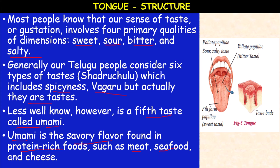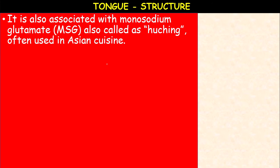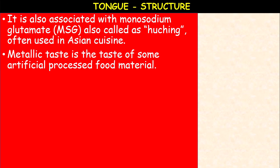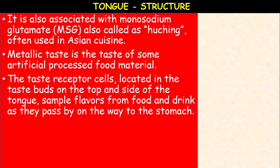Basically the four main tastes are: sweet at the tip of the tongue, then sour and salty at the sides of the tongue, and bitter at the back of the tongue. The tongue is also associated with monosodium glutamate — MSG — also called ajinomoto, often used in Asian cuisine. The metallic taste is the taste of some artificial processed food material. For example, in Chinese noodles they add chemicals like ajinomoto, which are metallic taste flavors.